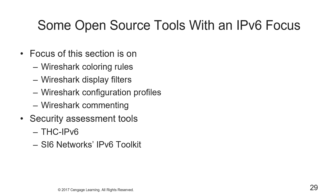Now we're going to talk about some open source tools that really focus on IPv6. We'll cover Wireshark coloring rules, filters, config profiles, and packet commenting, as well as security assessment tools like THC IPv6 and SI6 Networks' IPv6 toolkit. Wireshark has the capability of applying a color scheme to different types of traffic so you can use colors to distinguish IPv6 from v4, or ICMPv6 from ICMP, or even a very specific type of packet from another.